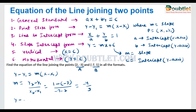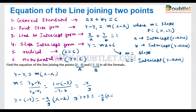Now we can put any of the coordinates in place of x1 and y1. Taking point A as (x1, y1), we write y minus (minus 3) equals (minus 4 over 9) times (x minus 2). Solving this gives y plus 3 equals (minus 4 over 9)(x minus 2).